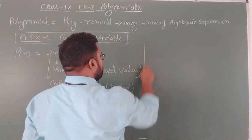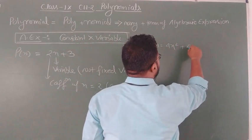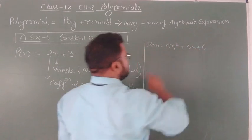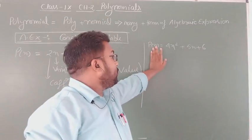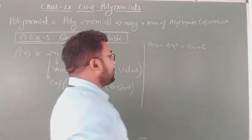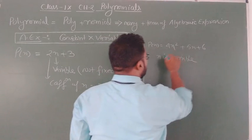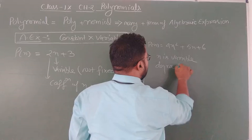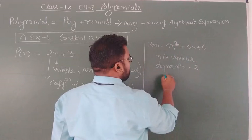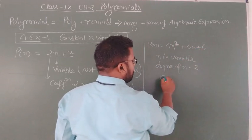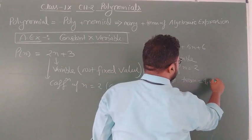Suppose next P(x) is equal to 4x² + 5x + 6. This is an algebraic expression — specifically a quadratic polynomial. It is also denoted by P(x), where x is the variable. The maximum degree of x is equal to 2. Here, 4 and 5 are the constant coefficients, and 6 is the constant term.